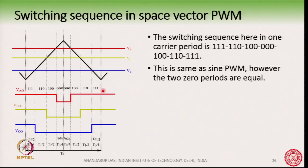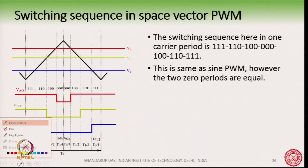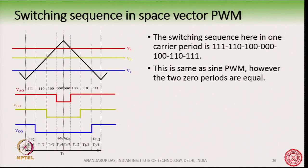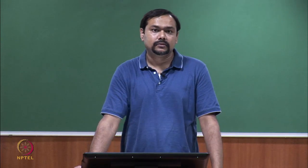The difference is that this period here and these two periods — the sum of this plus this period — these two sums are equal. This is what makes space vector PWM different from sinPWM, where it is always ensured that the zero periods at the beginning and at the end are equal in a sub-cycle.